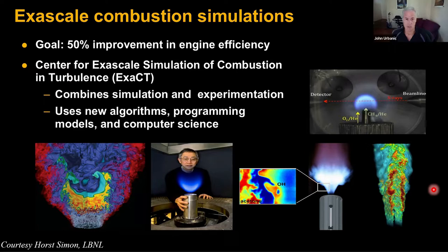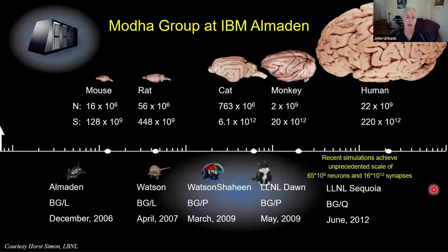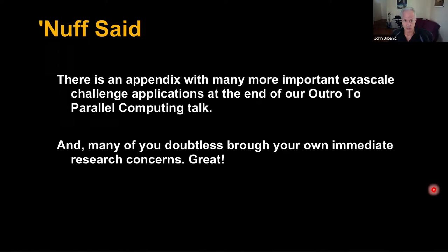And just to give you one other very different one — brain simulation modeling requires large-scale parallel computing, not only because the brain is inherently very parallel, but because the brain is so huge. A human brain has many billions of neurons and trillions of synapses. So trying to model any substantial fraction of the brain requires a huge parallel computer. I've got an appendix with lots of parallel computing applications, but we won't spend our time there.